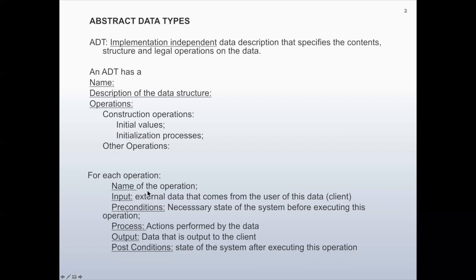For each operation, we have the name of the operation, input — which is external data that comes from the user of this data, called the client — pre-conditions, which are the necessary state of the system before executing this operation, process, which is the actions performed by the data, output — data that is output to the client — and post-conditions, which is the state of the system after executing this operation.